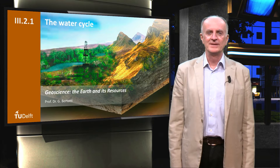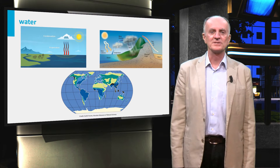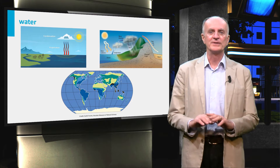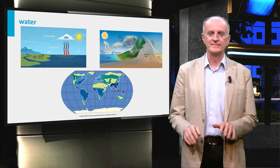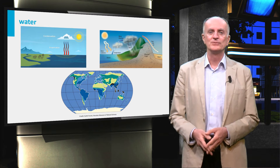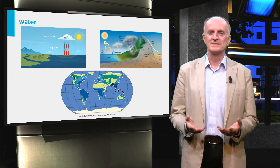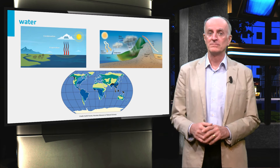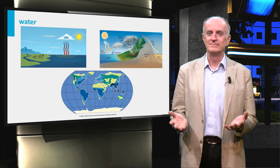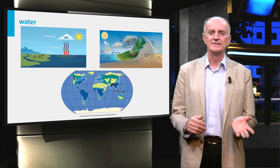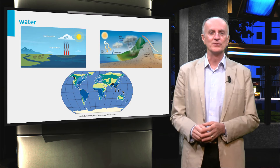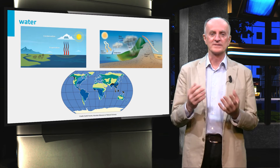In the previous clips we have seen how precipitation is developed and how it is distributed over the earth. Now it is time to look at what happens to the rainfall on the ground. Where does it go? How does it reach the sea? In summary, we want to look at the water cycle.